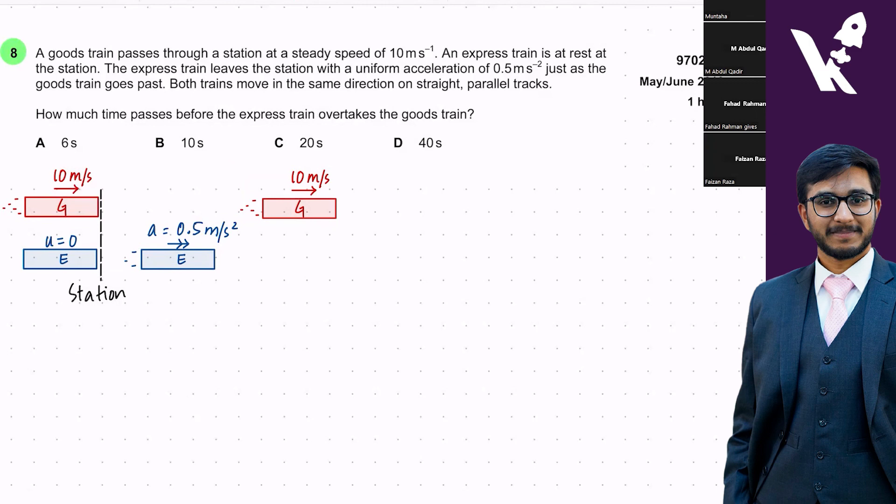How much time passes before the express train overtakes the goods train? One point will come when these two trains are going to be side by side to one another. The express train will overtake this goods train, they are together again.